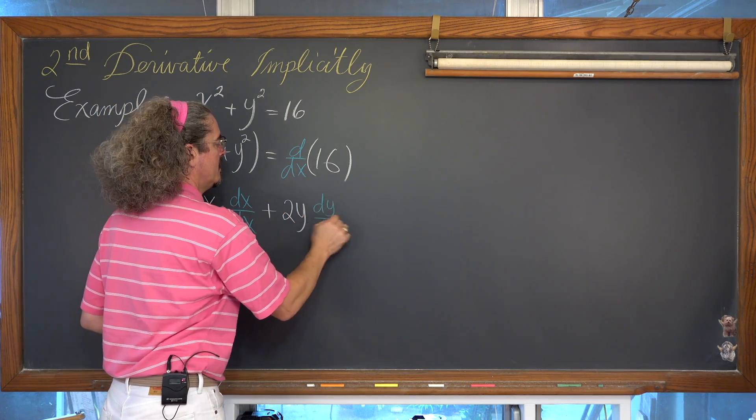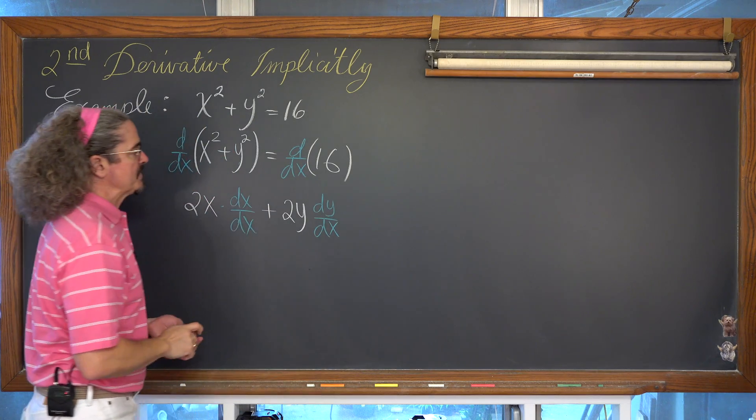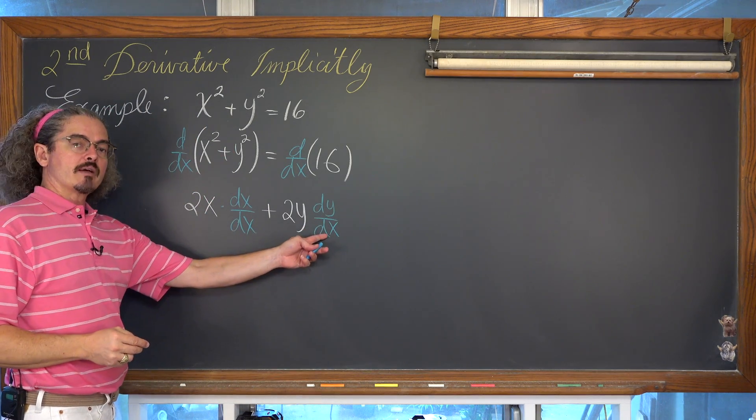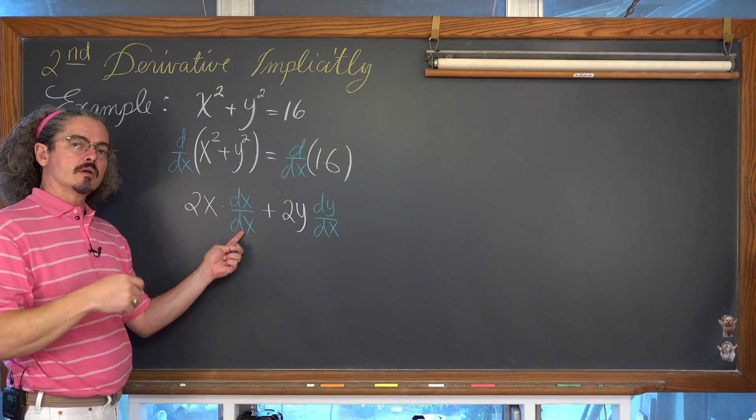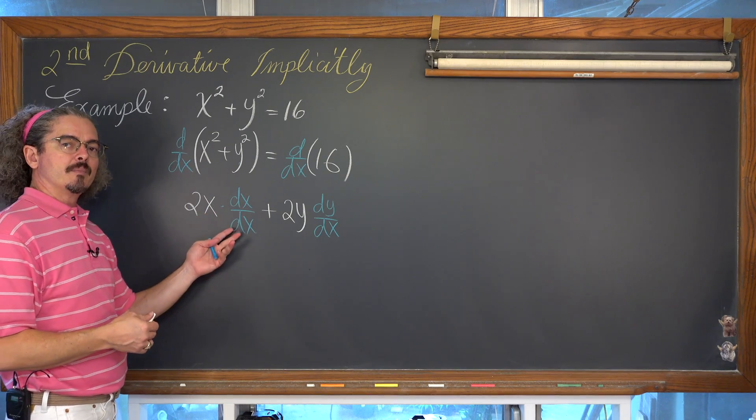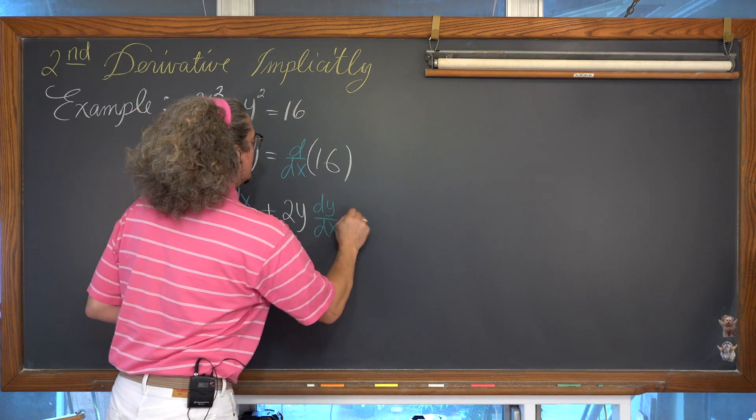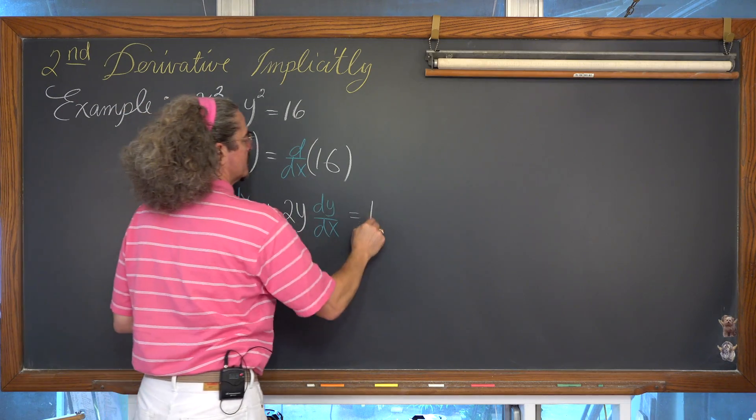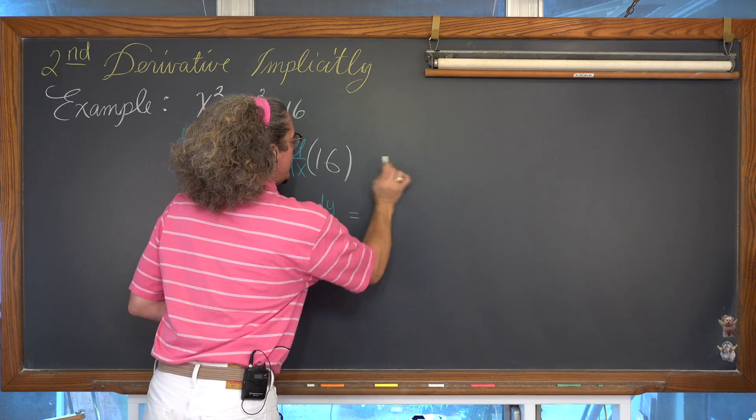We're going to take the derivative of y with respect to x. So if you haven't caught on yet, that's why we have a y prime and why we don't have any x primes when we're dealing with equations that involve variables of x and y and we're taking the derivative with respect to x.